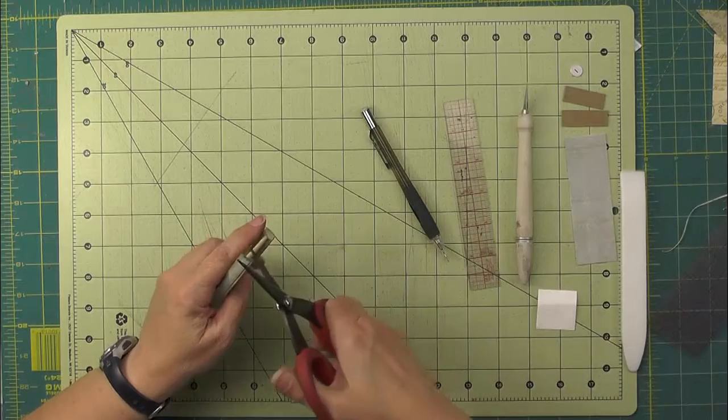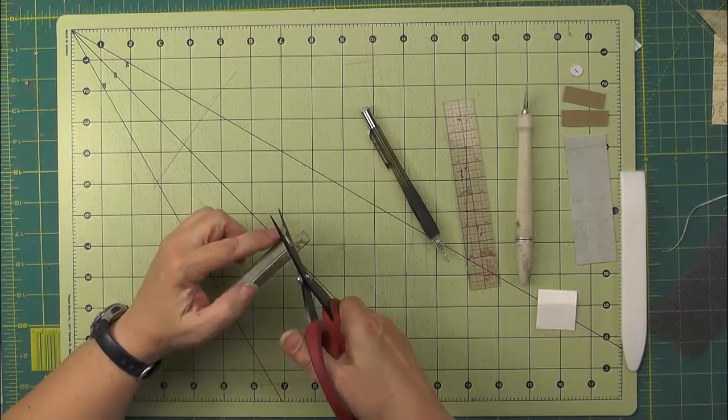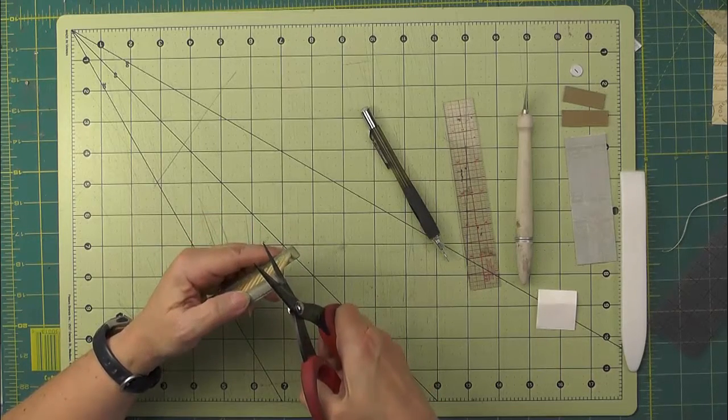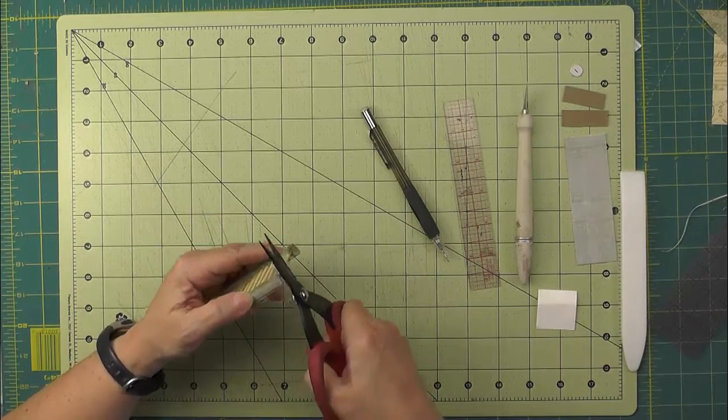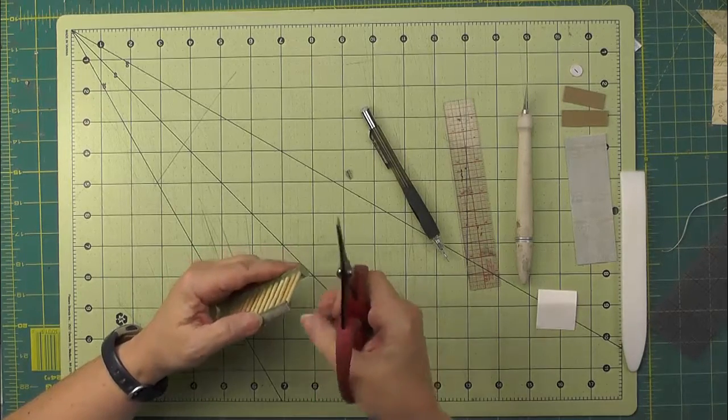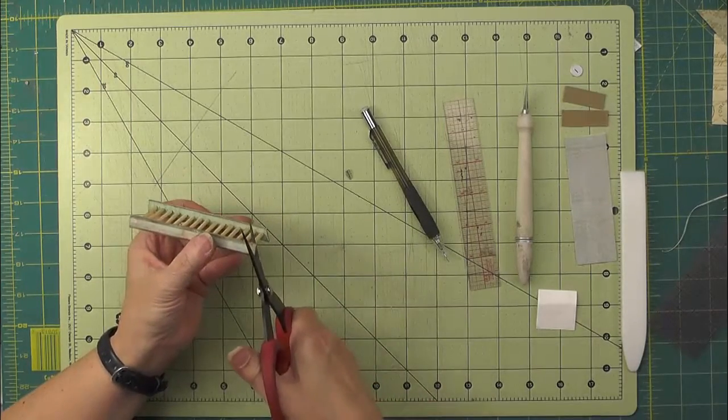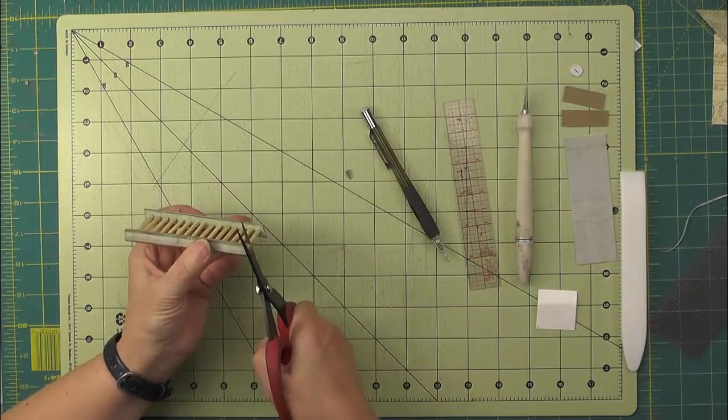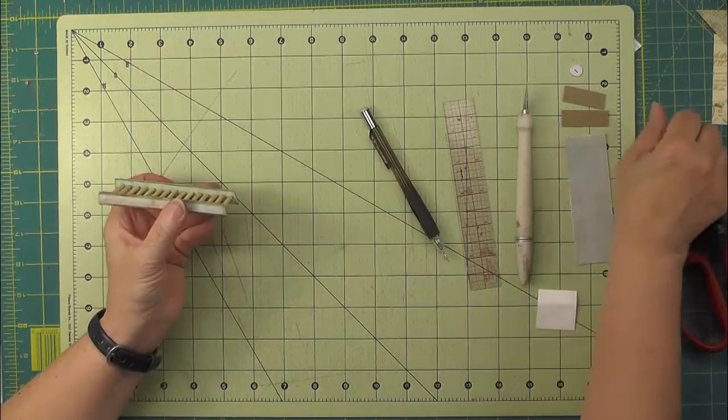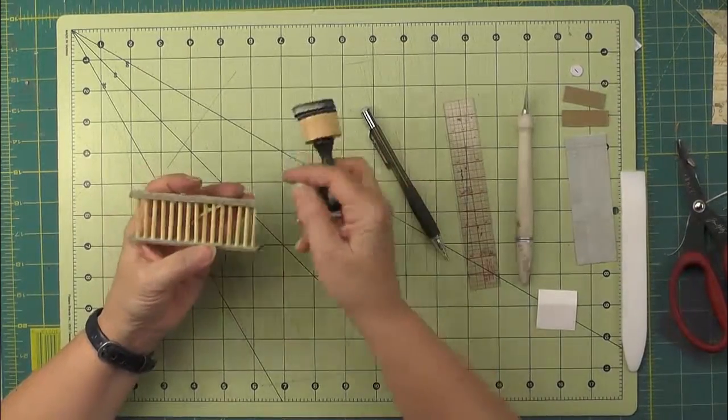And then just take your scissors and line up the scissors with the eighth inch mark and the corner on the front. And then just give it a cut off. So we're going from that eighth inch mark to the front corner. And that just creates a nice little angle for our ladder. And I'm just going to ink that.